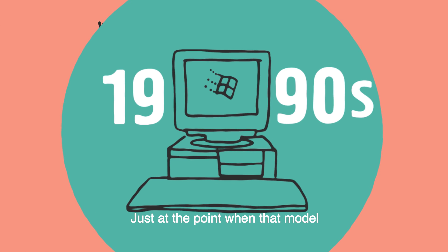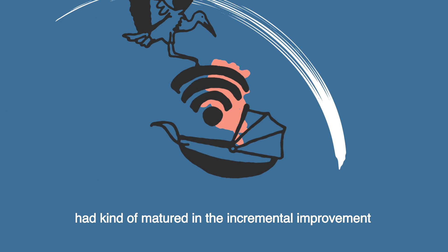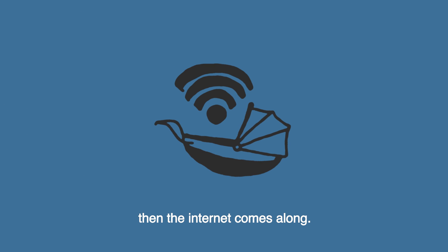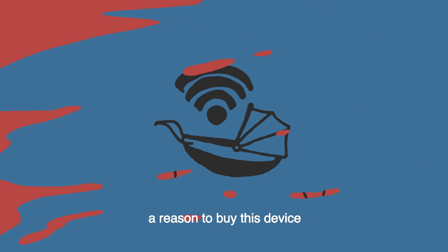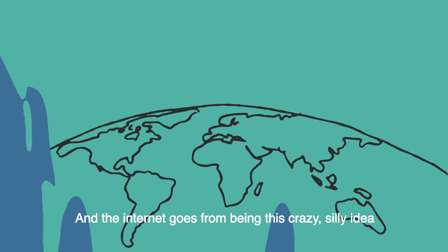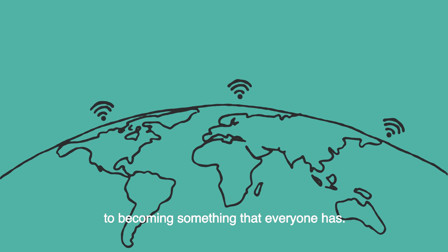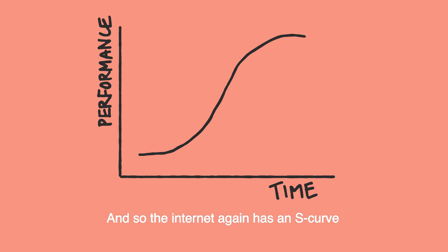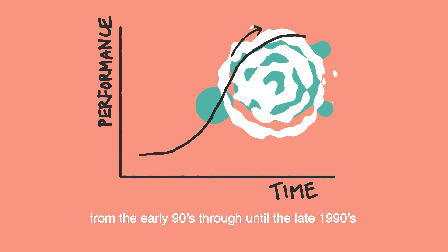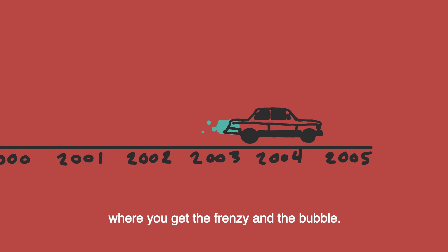Just at the point that the PC model had matured in incremental improvement, the Internet came along and gave a whole new bunch of people a reason to buy this device and a whole new set of experiences to be created. The Internet went from being a crazy silly idea to something that everyone has. The Internet again had an S-curve from the early 90s through until the late 1990s, where you get the frenzy and the bubble.